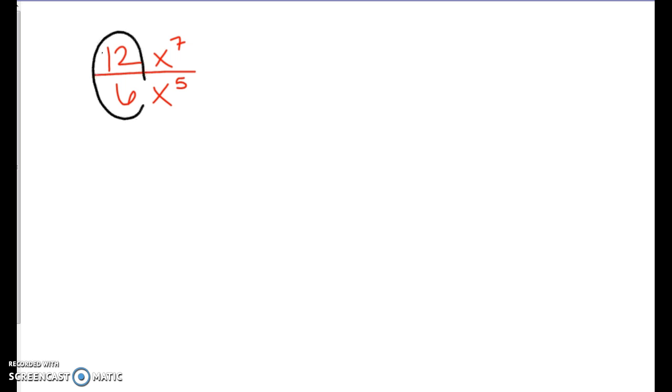Kind of like with the like terms here. So 12 and 6, and then x to the 7th divided by x to the 5th. So I kind of separate it into two separate problems. Okay, so 12 over 6, that reduces to 2 over 1, and we know that to just be the number 2.